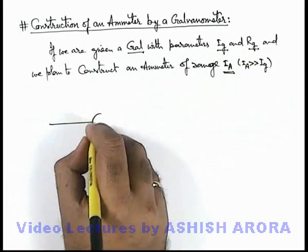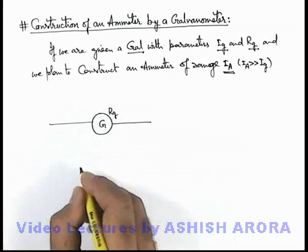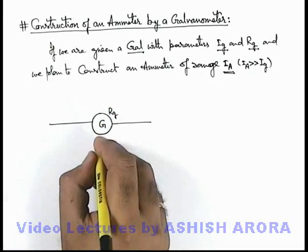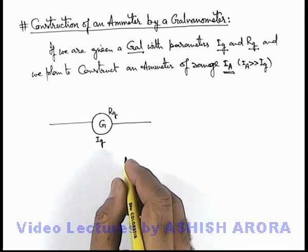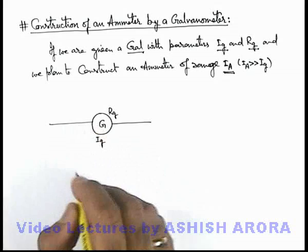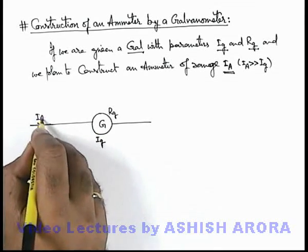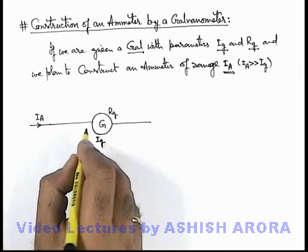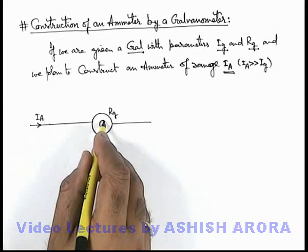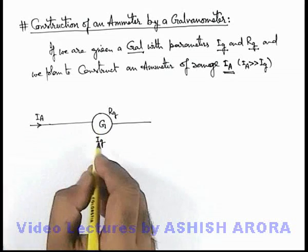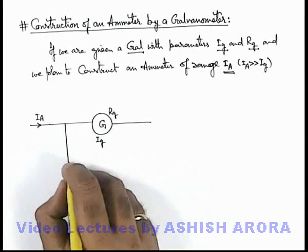So if we wish to construct an ammeter which can measure currents up to the range i-a, and for this we are using a galvanometer of full deflection current i-g and coil resistance r-g — we have a galvanometer whose coil resistance is r-g and it deflects full scale when a current i-g is passed through it, as discussed in the previous section. If the same high current i-a is directly supplied to the galvanometer, it will get damaged because it is excessively high compared to the full deflection range.